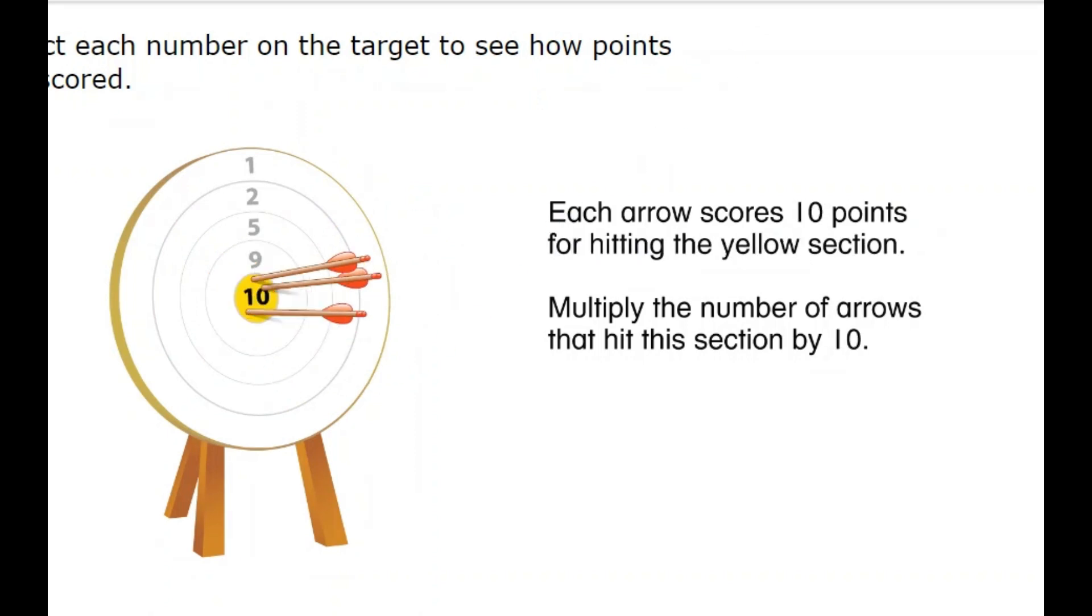Each arrow scores 10 points for hitting the yellow section. Multiply the number of arrows that hit this section by 10.